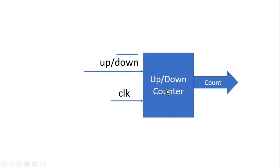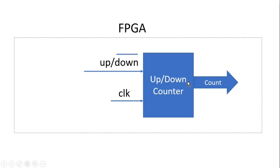If we select the up mode, this counter will count in the upward direction — that is 0, 1, 2, 3, and so on. If we choose down mode, this counter will count in the reverse direction — that is 6, 5, 4, 3, 2, 1, 0. We want to port this counter design inside an FPGA. Usually engineers map this signal to one of the switches, but in our case our FPGA board does not have any switch available on it. So the question is: if we don't have any switch available, where will you connect this up-down signal and how can you test your counter design?